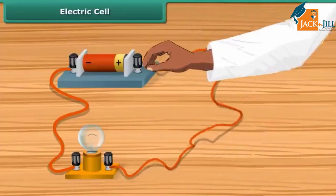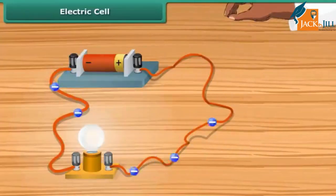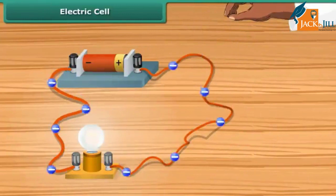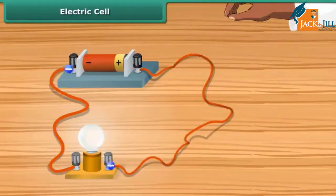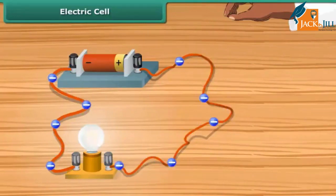When a metallic wire connects these two terminals, the electrons resulted from chemical reaction start flowing through the wire, constituting an electric current. These electrons flow from the negative to positive terminal. Thus, a cell is a simple device in which chemical energy is changed into electric energy.